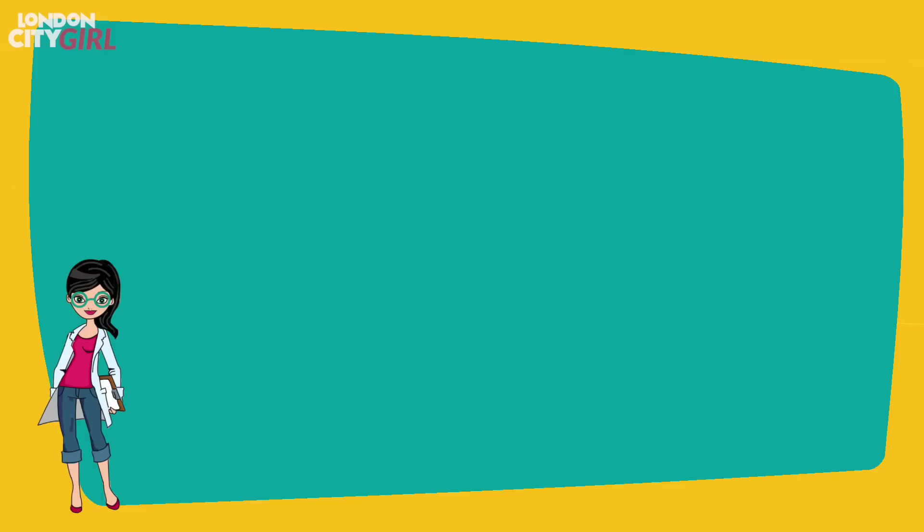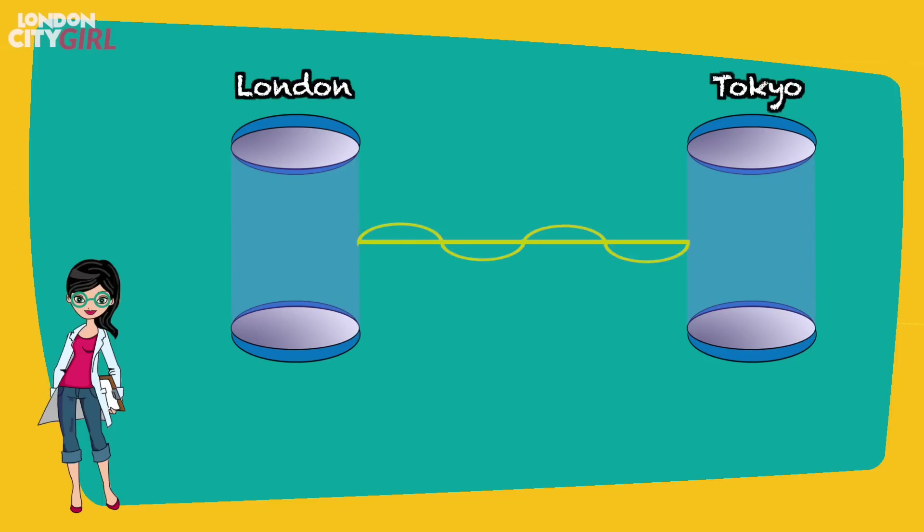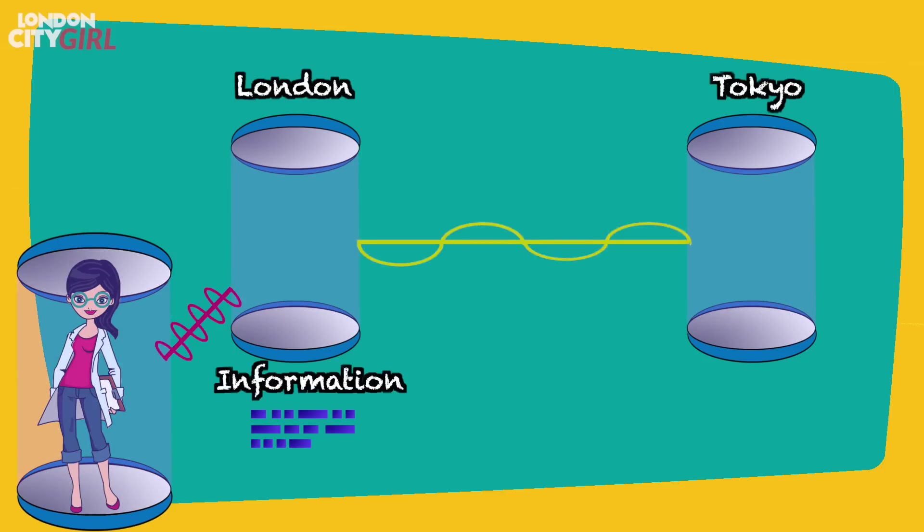Imagine that human quantum teleportation became a reality. Say Alice wants to travel from London to Tokyo. Two chambers of entangled particles would be in each city. Alice would step into a scanning device and the quantum state of each individual particle would be measured in relation to the chamber of particles in London.